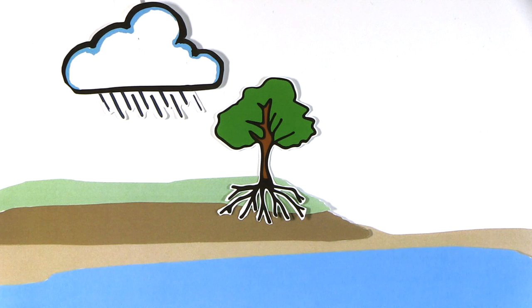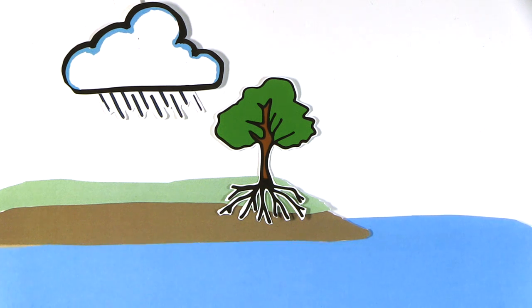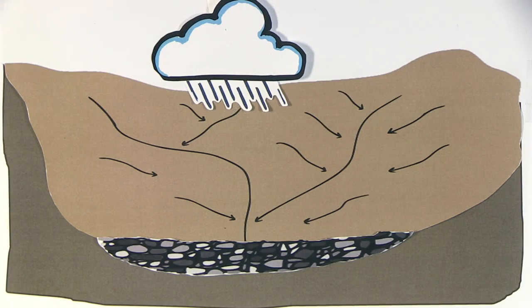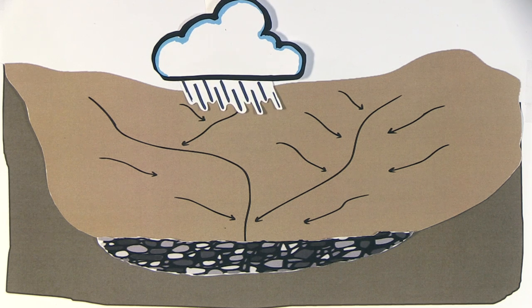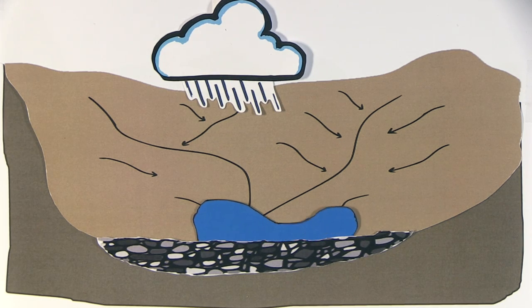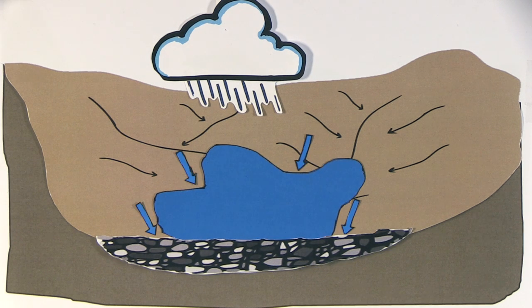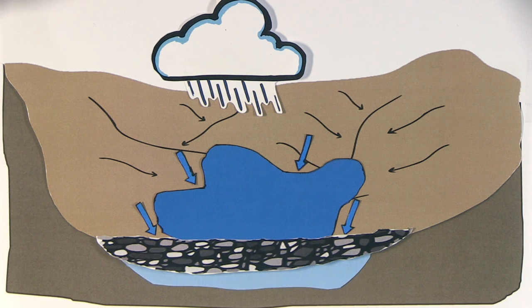Groundwater moves in and out of aquifers, and this movement may occur naturally or artificially. Recharge of aquifers can be enhanced artificially by increasing the availability of the water supply for recharge, with the intention to store and treat water in aquifers. This artificial recharge of aquifers is also known as managed aquifer recharge.